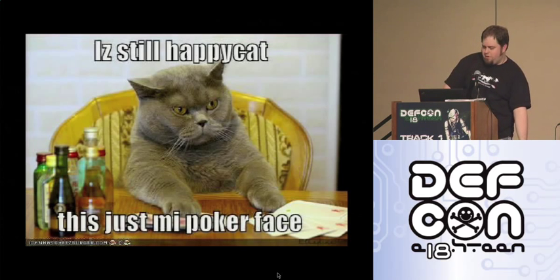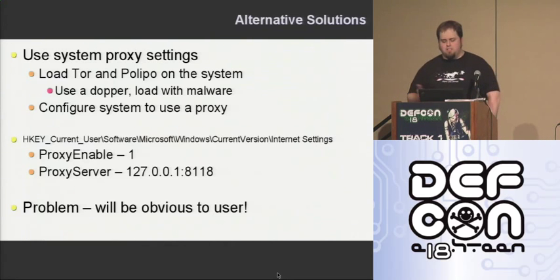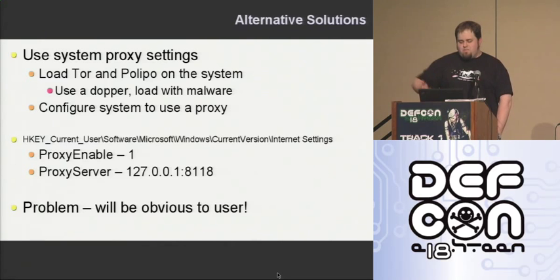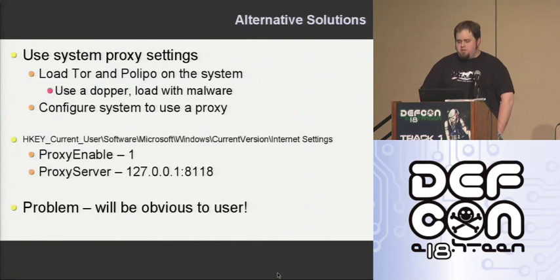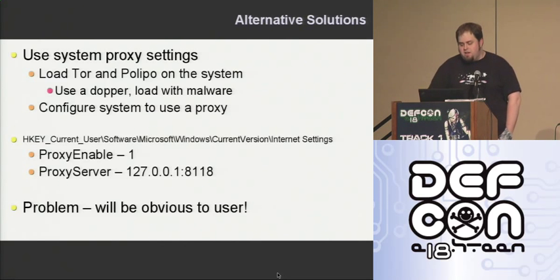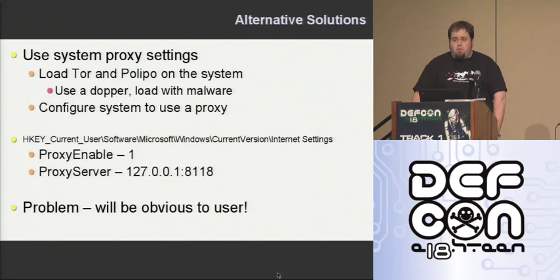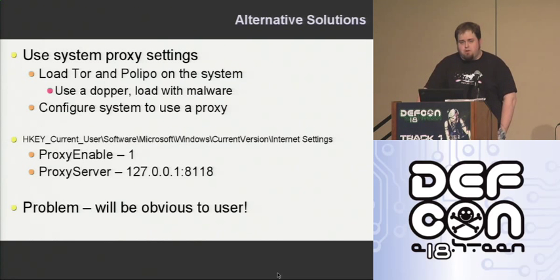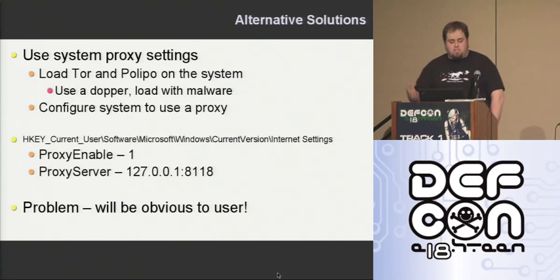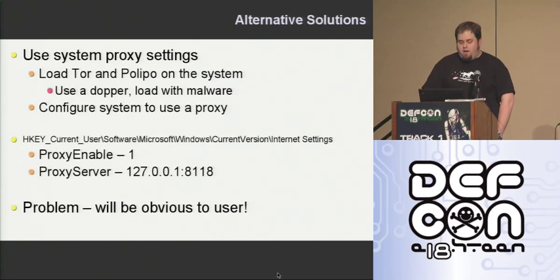So when I was supposed to play around with this, the next thing that popped into my head was: what if I use the Windows proxy settings? That would be pretty easy. I can just load Tor onto the system with Polipo or whatever you want to use for a proxy, and pretty much drop it on like you would any other piece of malware — along with my fake antivirus — and then just set the Windows configuration to use a proxy.